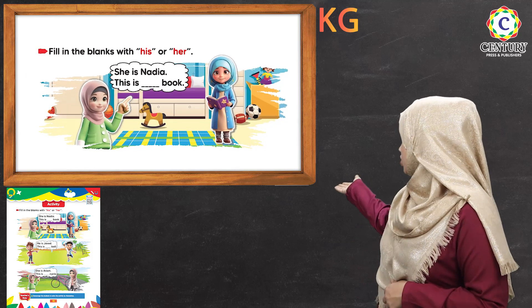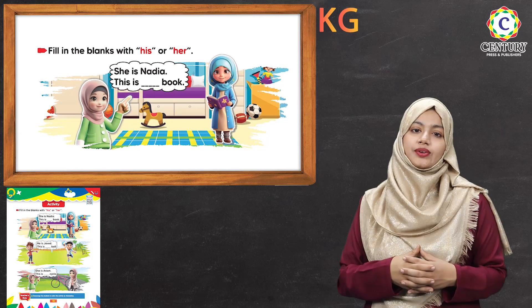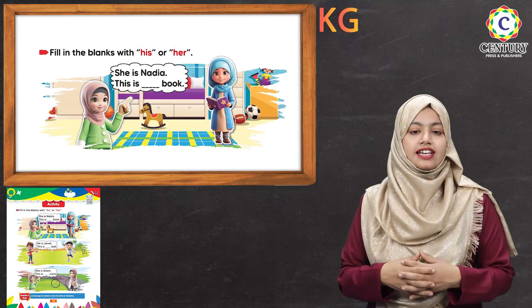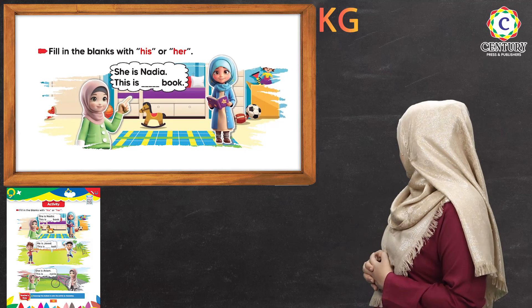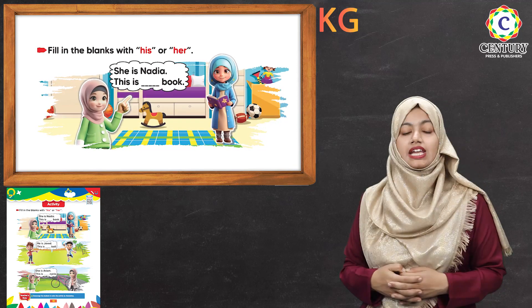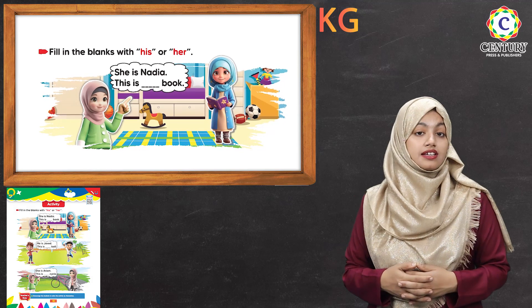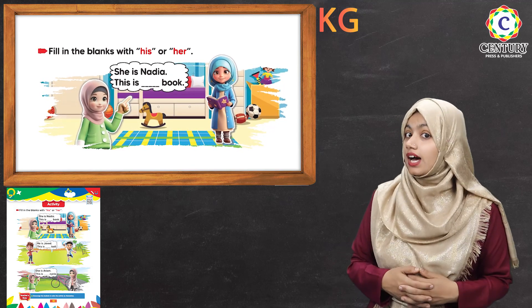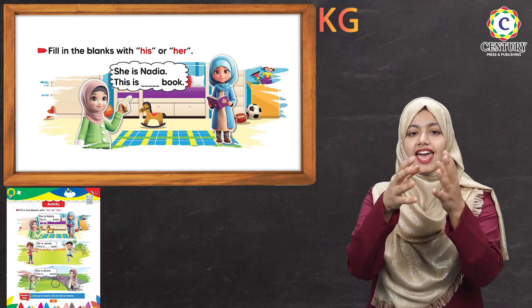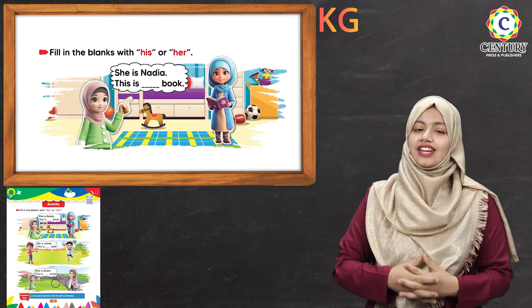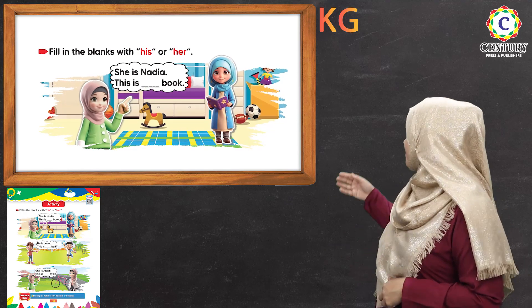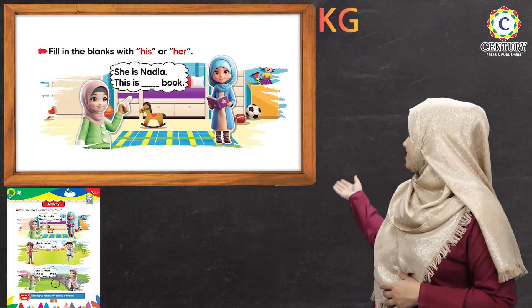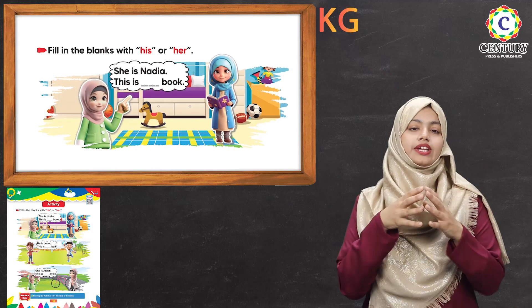Who is she? She is Nadia. You can see a book here. What do we use with the girl? Her — very good, you have to remember this. So you have to write here: her. She is Nadia. This is her book. Very good.